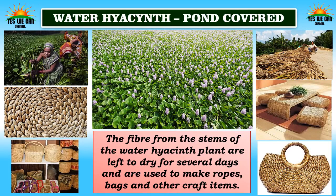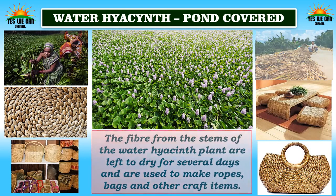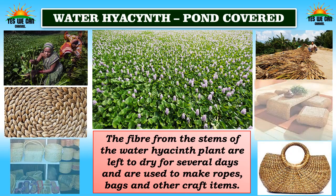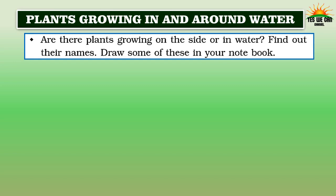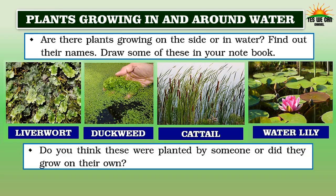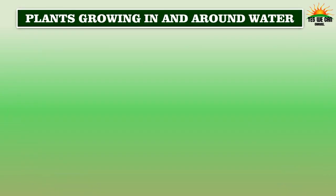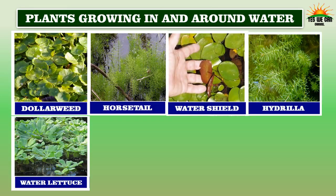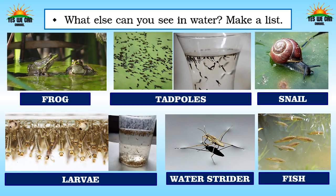The plant commonly covering ponds is water hyacinth. The fiber from the stems of the water hyacinth plant are left to dry for several days and are used to make ropes, bags and other craft items. Plants growing on the side or in water include liverwort, duckweed, cattail, water lily, dollar weed, horse tail, water shield, hydrilla, parrot feather, coon tail, and bladderwort. These grow on their own. Other things seen in water include frogs, tadpoles, snails, mosquito larvae, water striders, and fish.